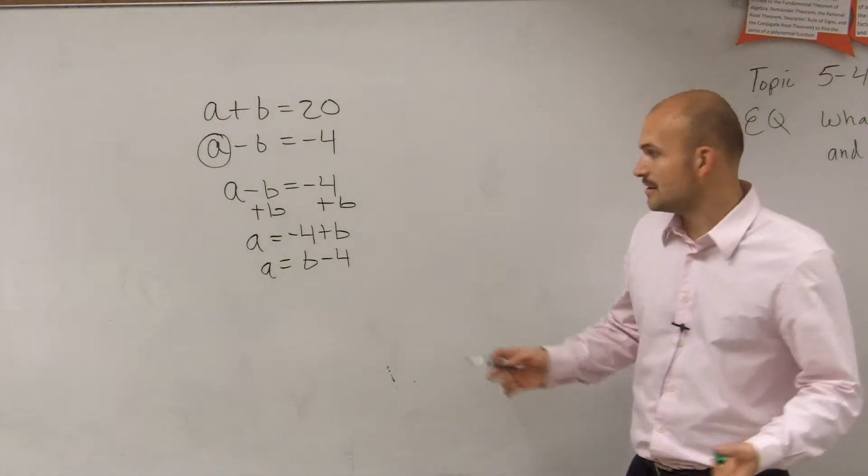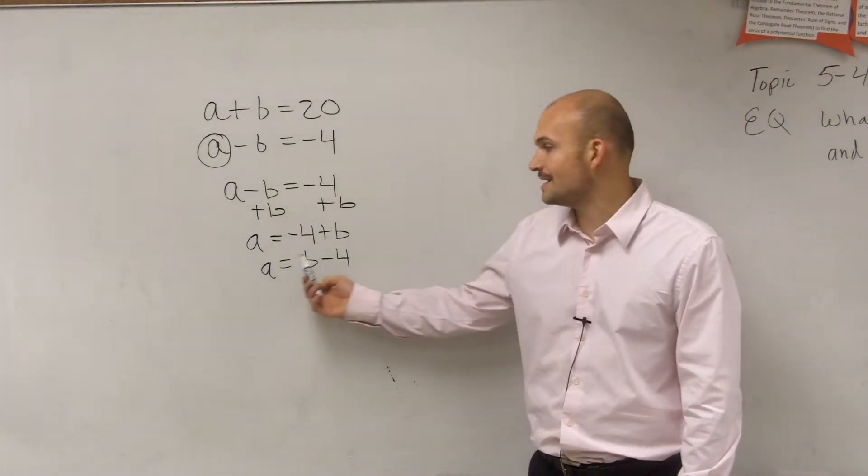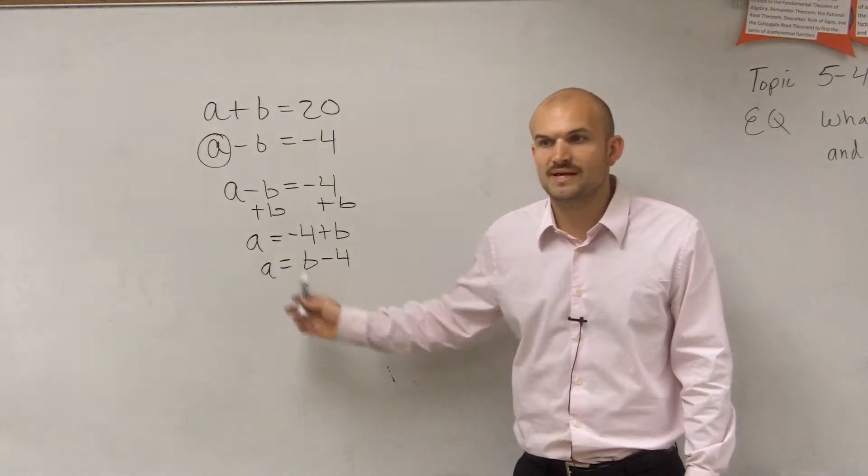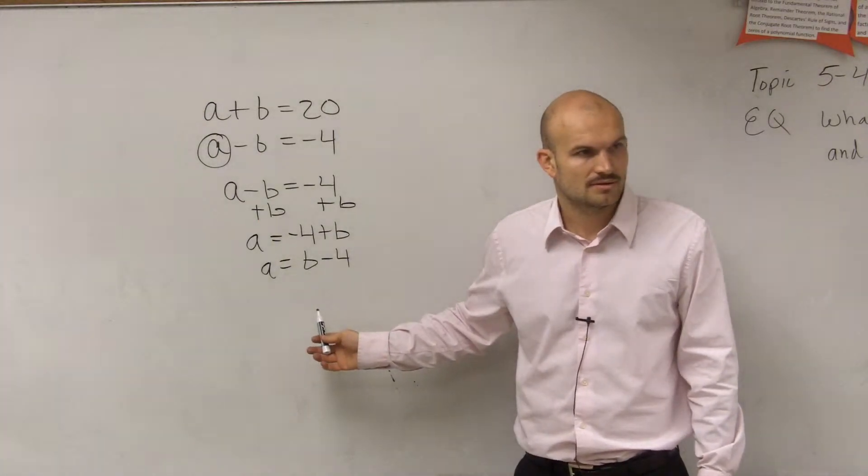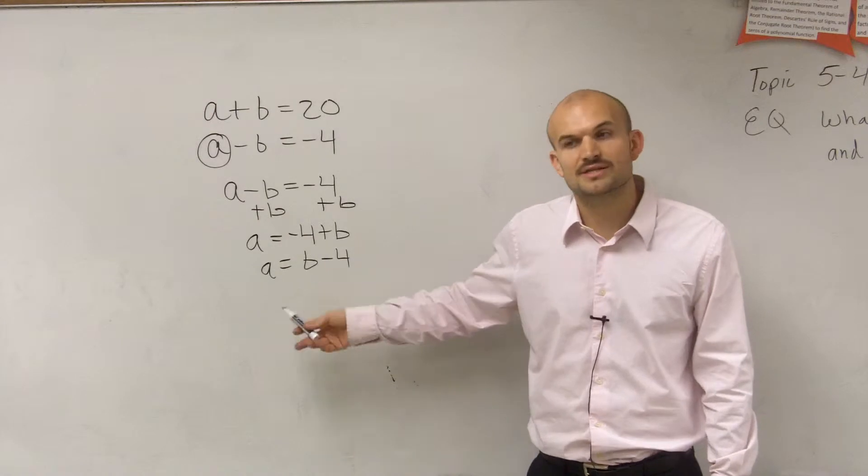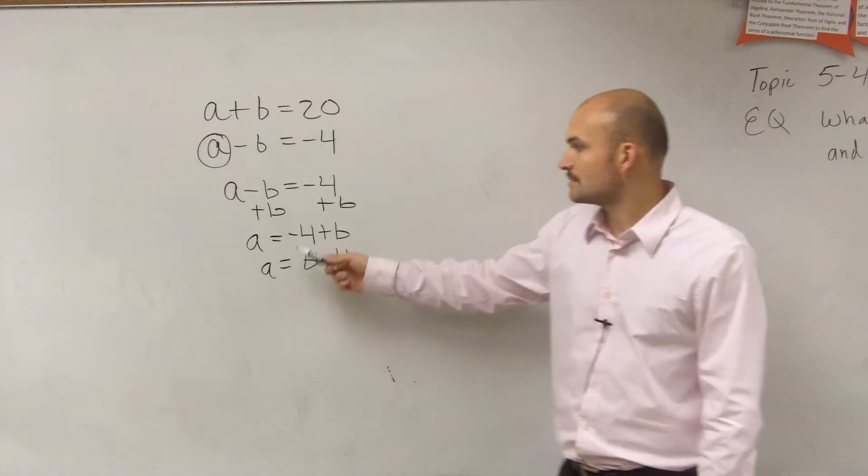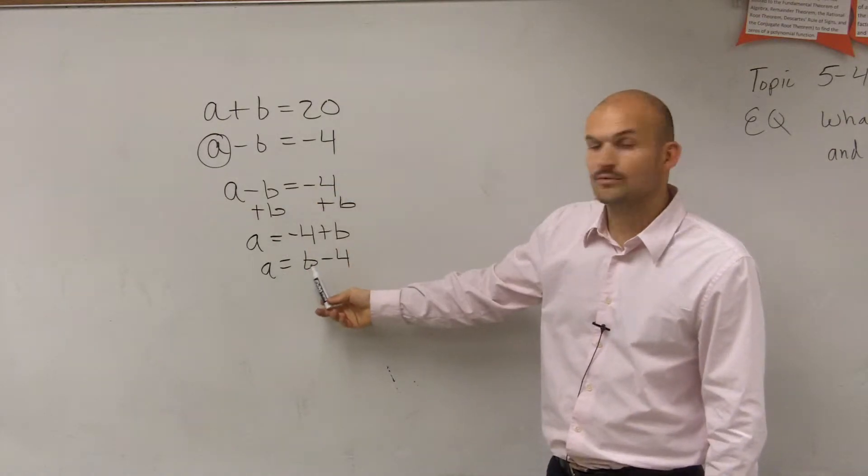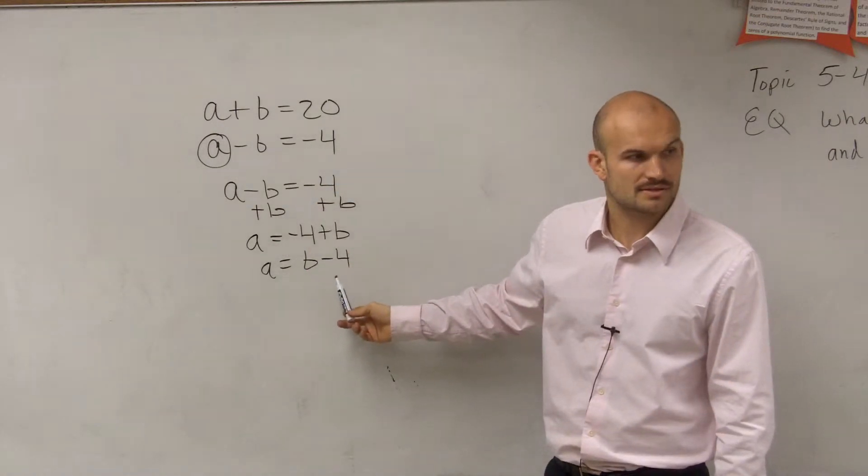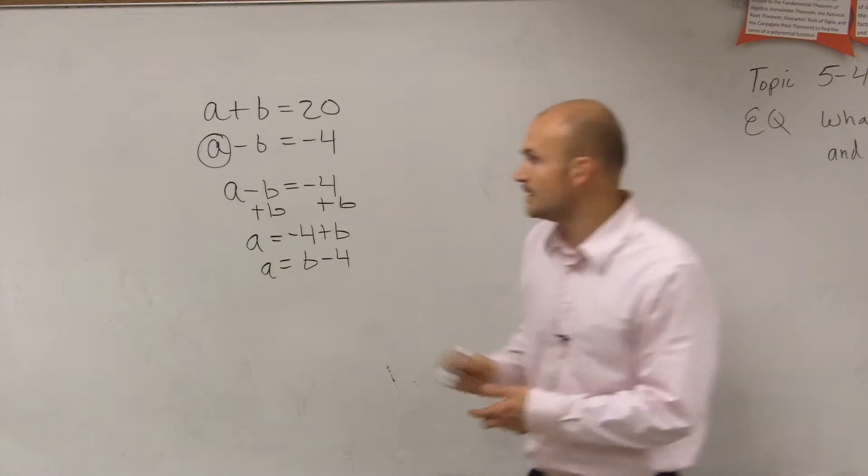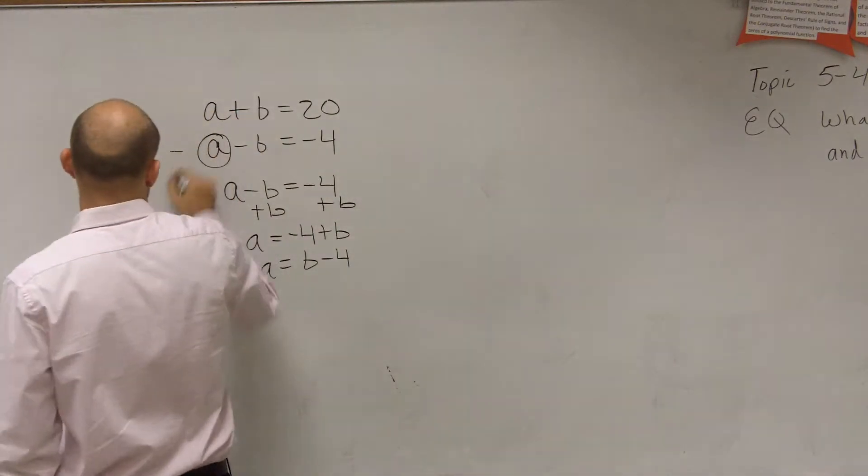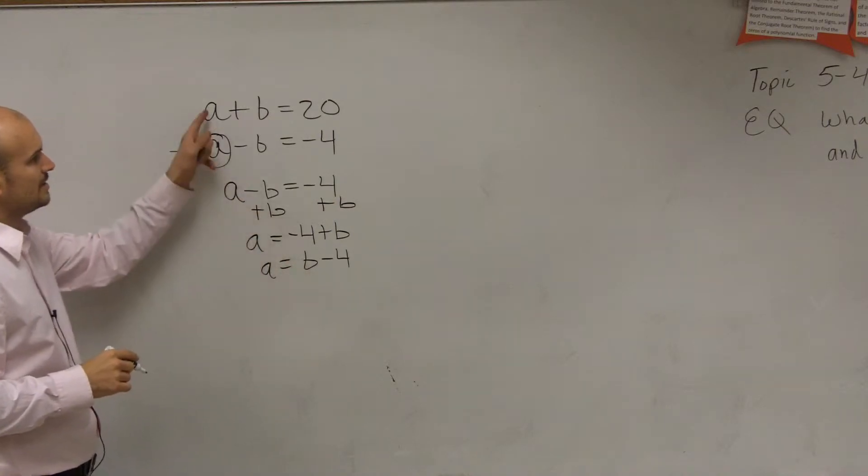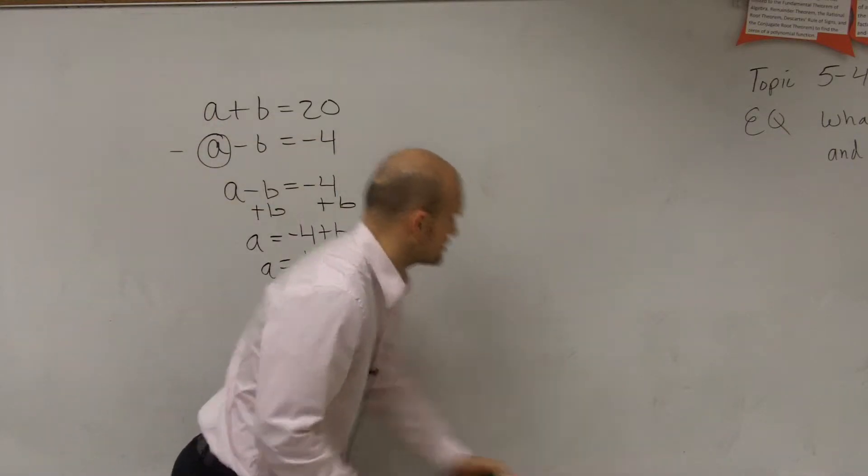So now, if you guys remember, since we know the value of a is equal to the value of b minus 4, these are replaceable with each other, right? One can represent the other because they're equal in value. So a can equal b minus 4, yes, the same thing. So what I'm going to do is since I already solved for this equation, I'm now going to plug in my value of a into my other equation.